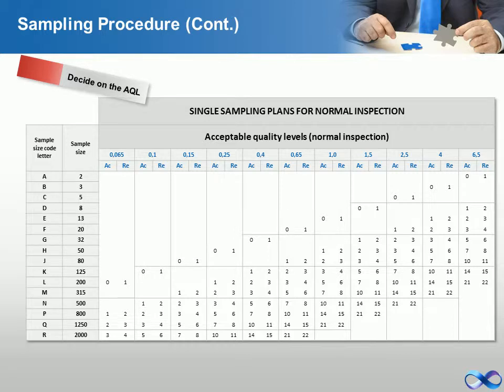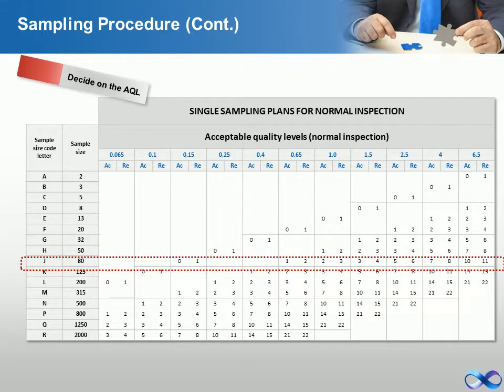Decide on the AQL. Use the code letter from the previous table along with the AQL to identify the sample size and the accept and reject quantities.